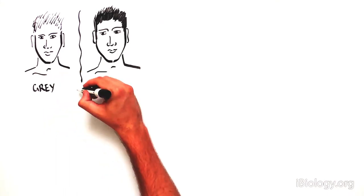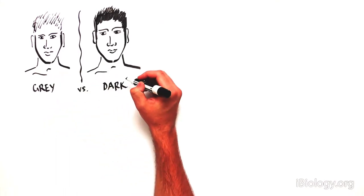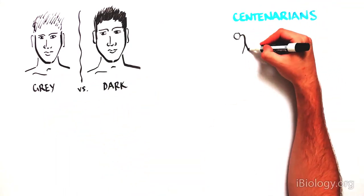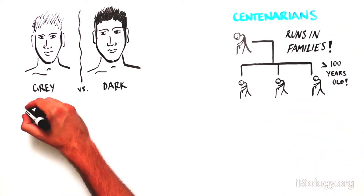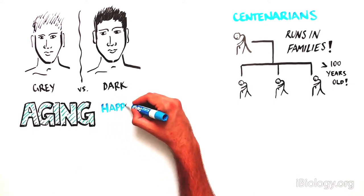As you've probably noticed, some people develop gray hairs earlier than others, and centenarians tend to run in families. In other words, we don't all age at the same rate.